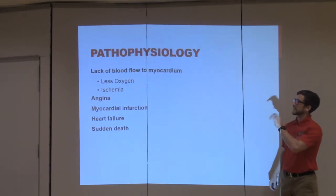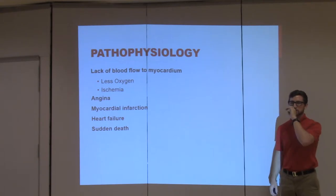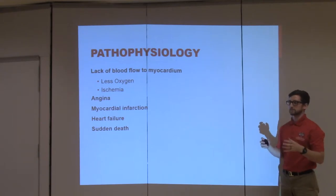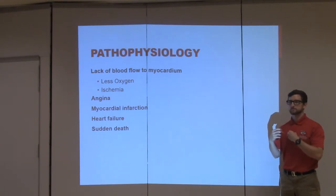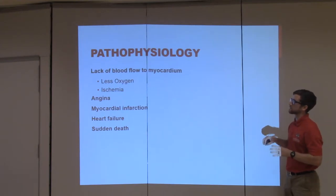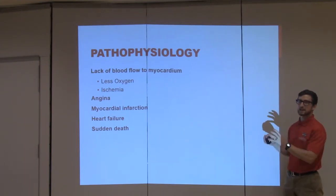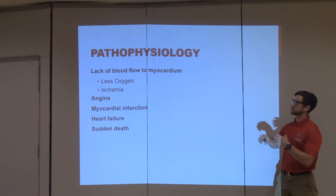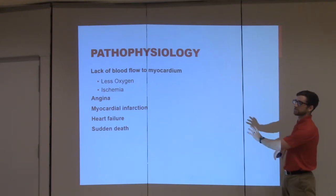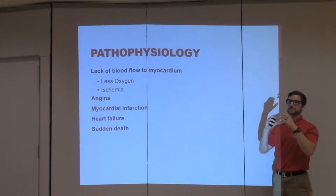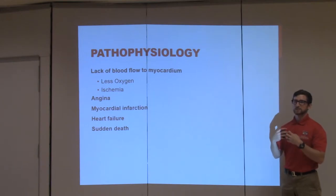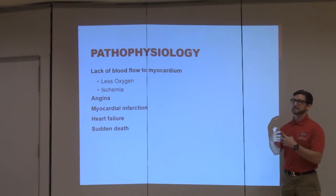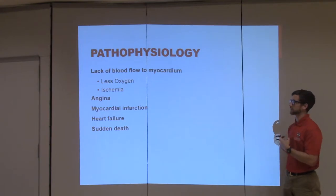We're looking at lack of blood flow to the myocardium — the arteries that supply oxygen-rich blood to the working tissues of the heart. When you have less oxygen, you have ischemia. And when you have ischemia, it could lead to a myocardial infarction, which is where cells are dying. They want oxygen, they're working, but they're not getting it, and that's leading to myocardial infarction.